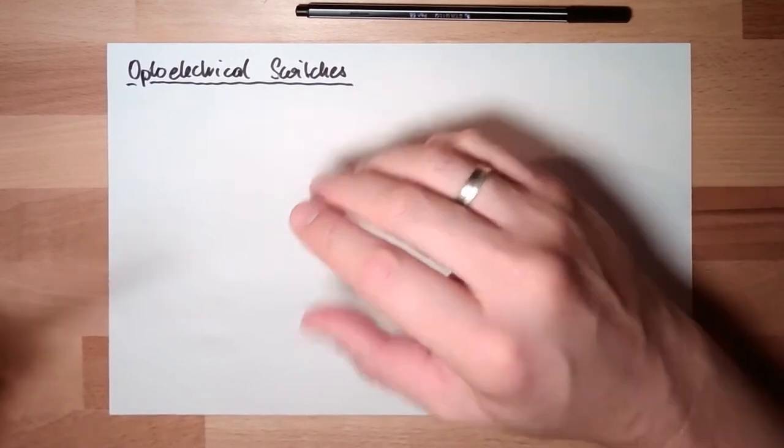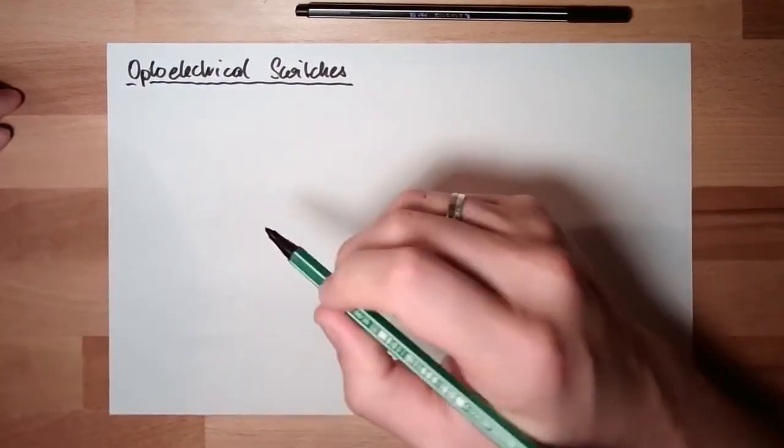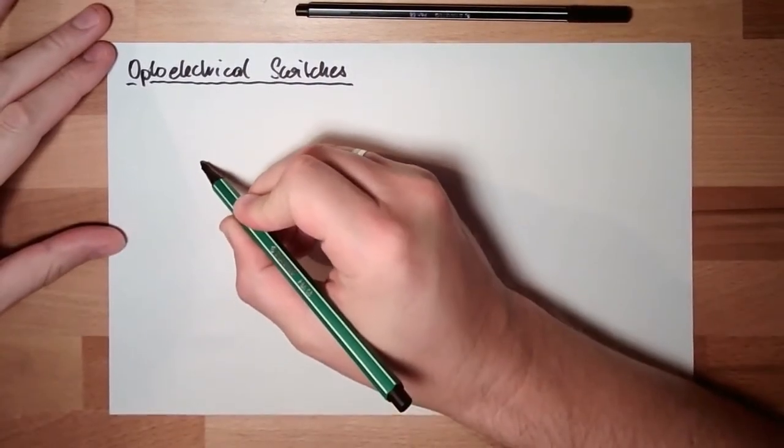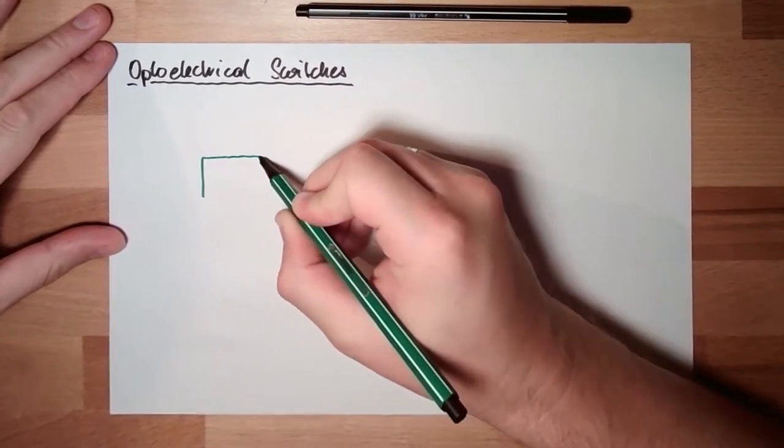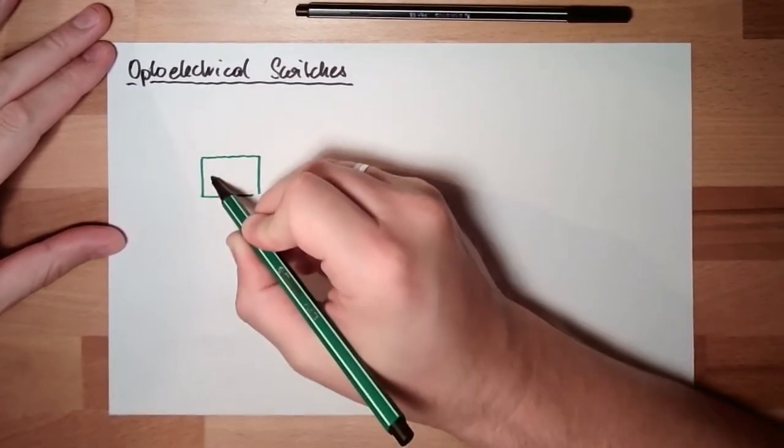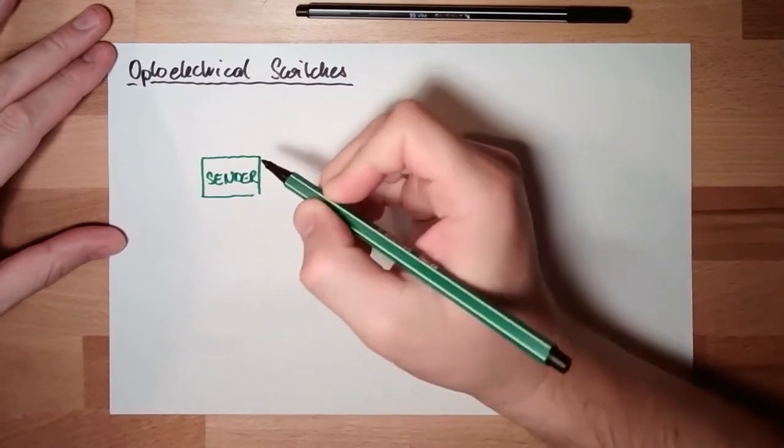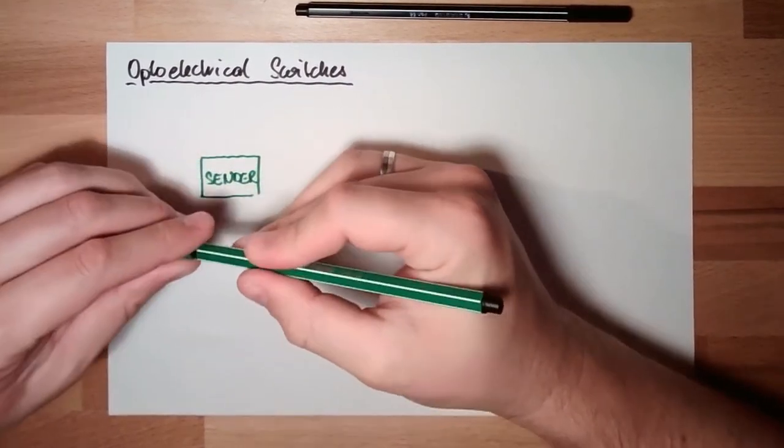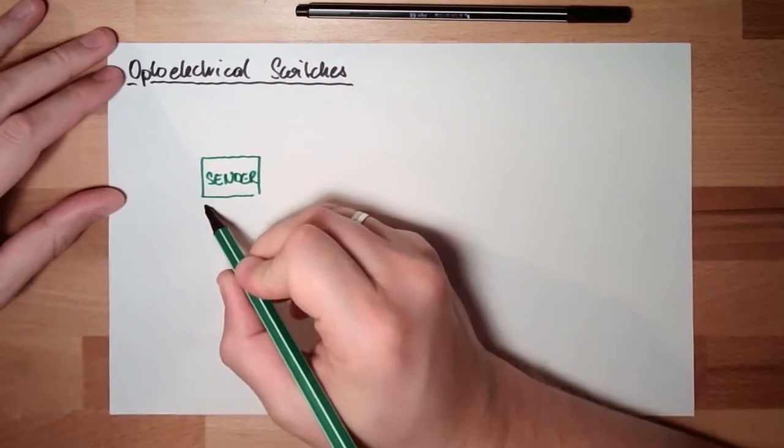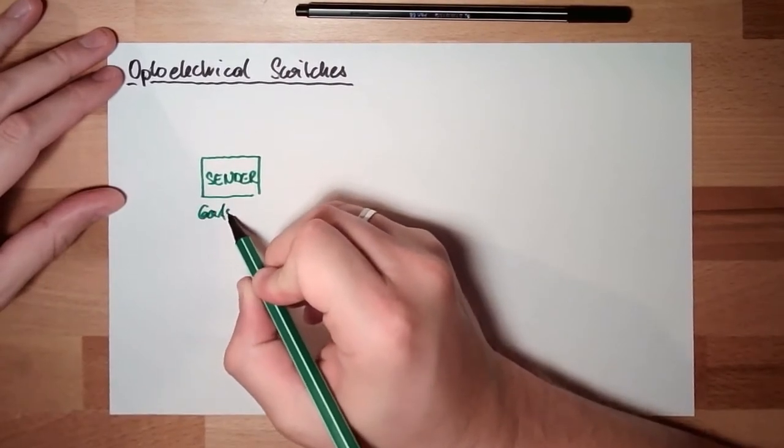Usually in all optoelectrical sensors, we do have a sender. Usually this is some gallium arsenide diode.